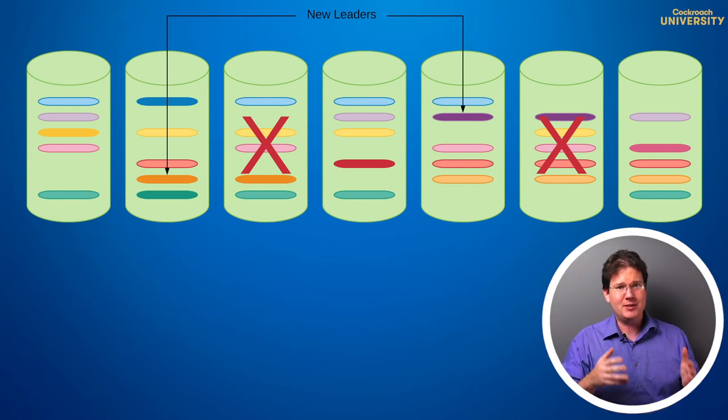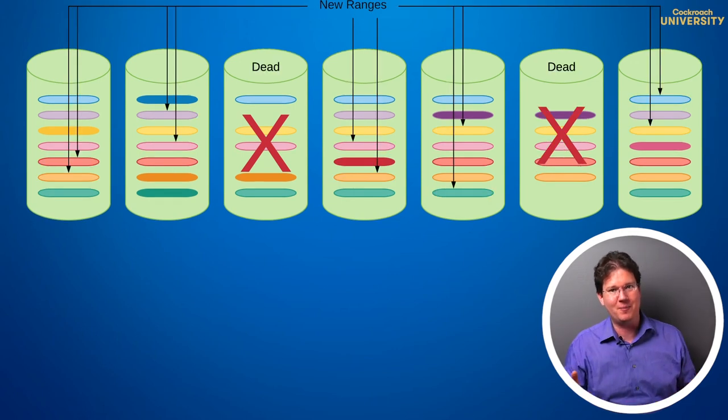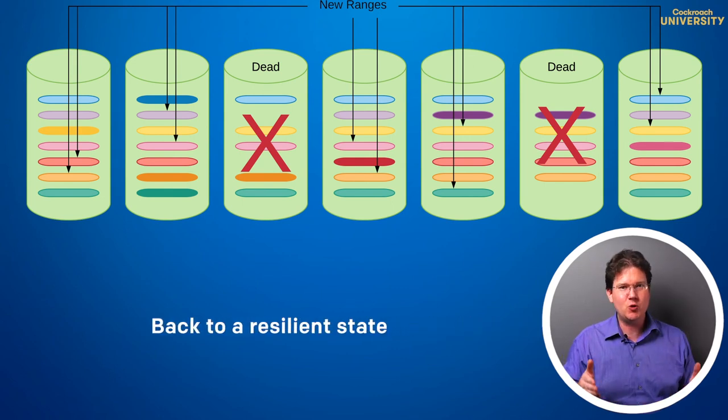At which point, the cluster will up-replicate the affected ranges to the remaining nodes that don't yet have them. Once this happens, the cluster is again in a resilient state, able to maintain availability with up to two more simultaneous node failures. Though now, we're down to five nodes left.